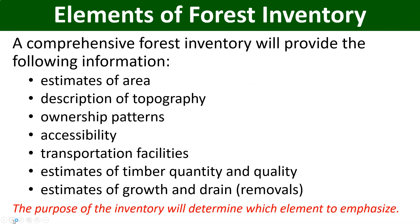What are the elements of forest inventory? A comprehensive forest inventory will provide the following information — these are the elements: estimates of the area, description of the topography, ownership patterns, accessibility status, transportation facilities, estimates of timber quantity and quality, and estimates of growth and drain, that is removals. These are the major elements that forest inventory entails.